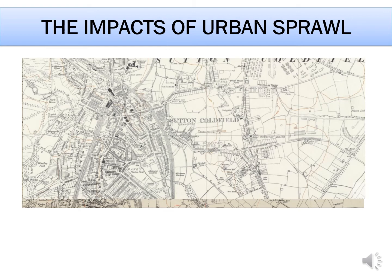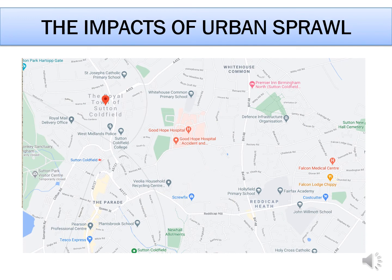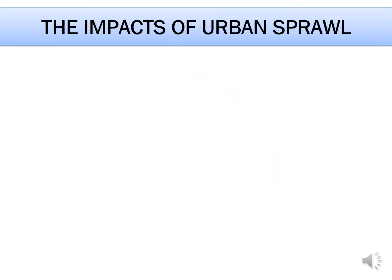Finally, looking at this map taken from Google in 2021, you can see lots of new buildings that have been created, like Good Hope Hospital, a couple of primary schools, and the Premier Inn. All of those things have been built on land which was once countryside. This is a clear example of how urban sprawl operates.